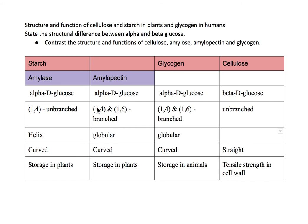Amylopectin is branched because there can be a bond from multiple positions. Amylose is unbranched because there's only one bond. Because there's only one bond, it forms a helix. However, amylopectin is globular and becomes a very large structure. But both of them are curved in structure.